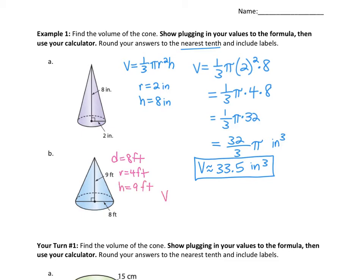In our formula: V = (1/3)π × 4² × 9. Following order of operations, we do 4 squared first. You can type this all into your calculator — if you want to use 3.14 as pi, that's fine too, just be careful with the one-third and put it in parentheses. Type it all in and you'll get your answer.